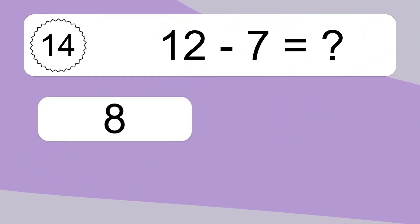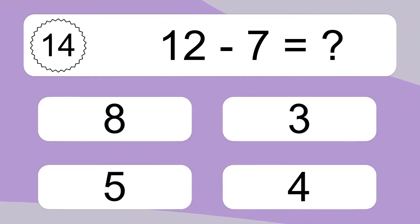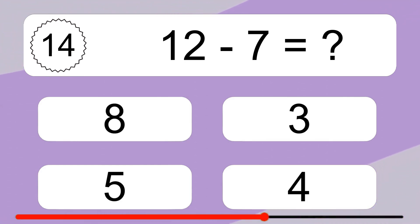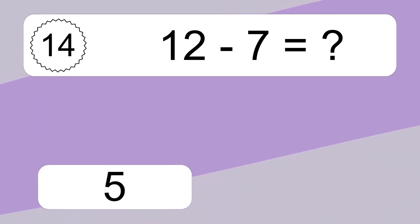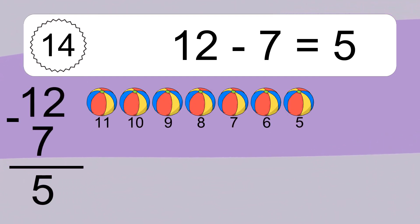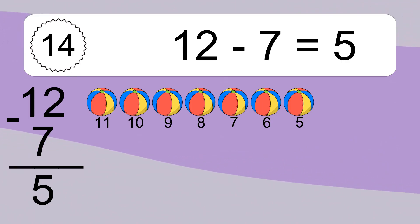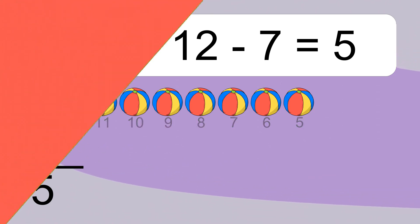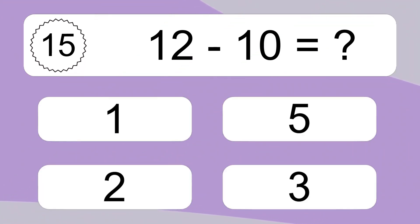12 minus 7 equals what? 12 minus 7 equals 5. Let's count it: 11, 10, 9, 8, 7, 6, 5.